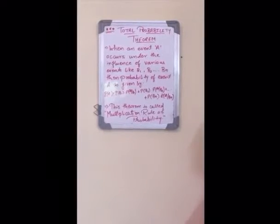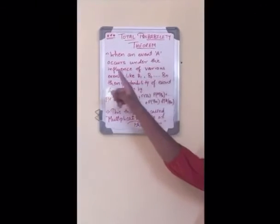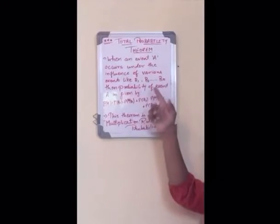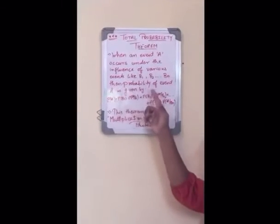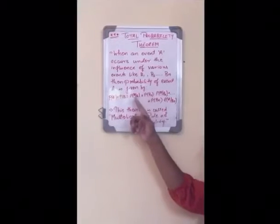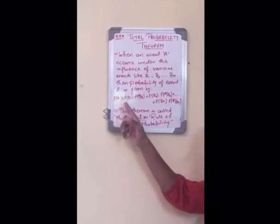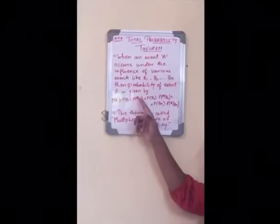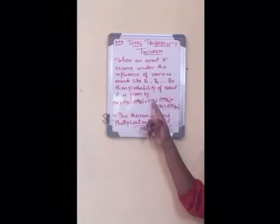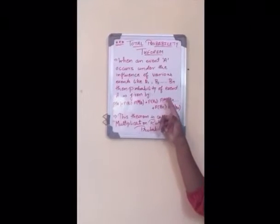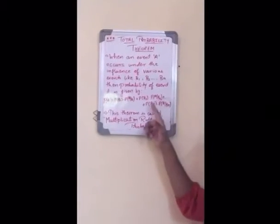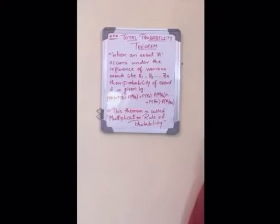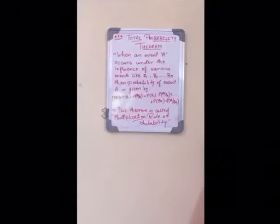The total probability theorem states that when an event A occurs under the influence of various events like B1, B2, up to Bn, then the probability of event A is given by: P(A) = P(B1)·P(A|B1) + P(B2)·P(A|B2) + ... + P(Bn)·P(A|Bn). This theorem is also called the multiplication rule of probability.